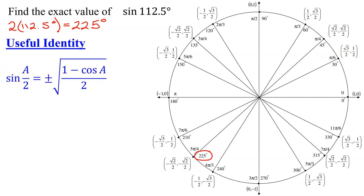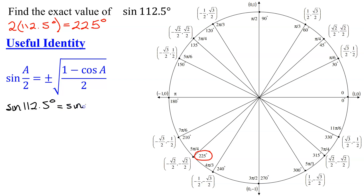And here is the identity for the sine function. The sine of a over 2 is plus or minus the square root of 1 minus cosine a, all over 2. So for this case, the sine of 112.5 degrees equals the sine of 225 degrees divided by 2. So in our formula, a is going to equal 225 degrees.